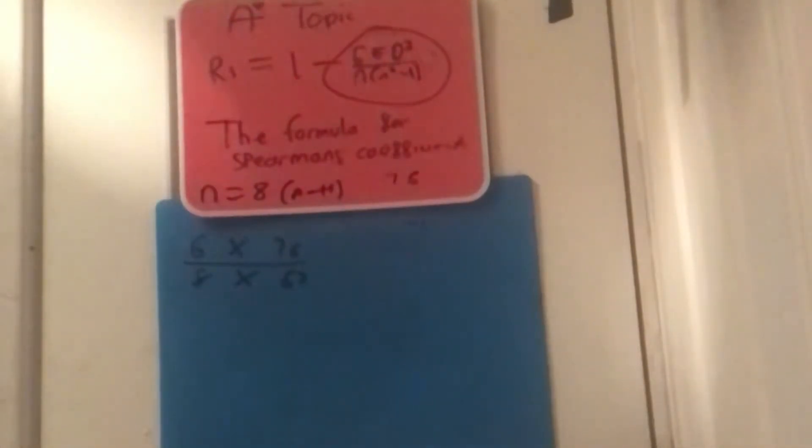Well, if we have n, which is 8, n squared is 64, and I don't know if you can see this, but it's n squared minus 1. So, yeah, 8 times 63.